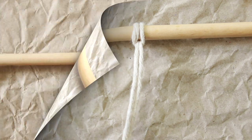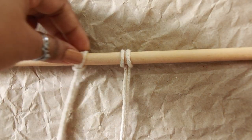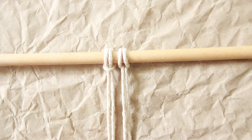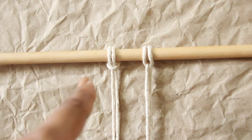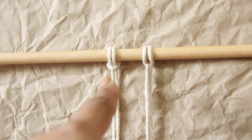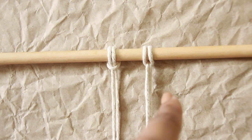In fact, reverse lark's head knot is nothing but the lark's head knot seen from behind. On the left, you have lark's head knot and when you turn it around is what you can see on the right side, which is also known as reverse lark's head knot.